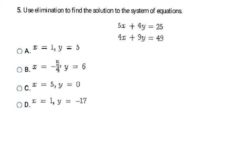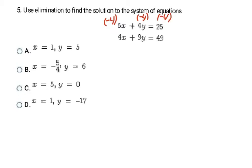Our first step is already done — the x's, y's, and numbers are all lined up, so I don't have to rearrange. My next step is to multiply to create opposite coefficients — the same number with opposite signs in front of either the x's or y's. I'll work with the 5 and 4 coefficients. Since they're both positive, I multiply the top equation by -4 and the bottom equation by +5, giving new equations: -20x - 16y = -100 and 20x + 45y = 245.